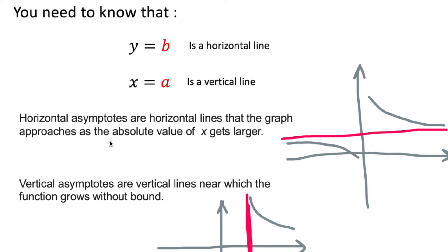You also need to know that horizontal asymptotes are horizontal lines a graph approaches as x gets bigger, towards plus infinity, or smaller towards minus infinity. You also need to know that vertical asymptotes are vertical lines near which the function grows without bound, or maybe the function decreases without bound.